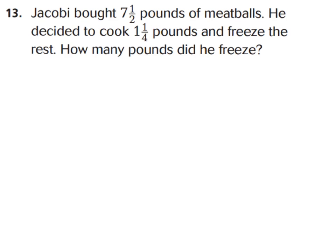Alright friends, let's look at question 13. It says, Jacoby bought 7 and a half pounds of meatballs. He decided to cook 1 and 1 fourth pounds and freeze the rest. How many pounds did he freeze? Let's think about what happened first. He started out with 7 and 1 half pounds of meatballs. He cooks, which means he uses them up, 1 and 1 fourth pounds. How many does he freeze? Because remember, he's going to freeze the rest. Whatever's left over. So this tells us we're going to subtract.